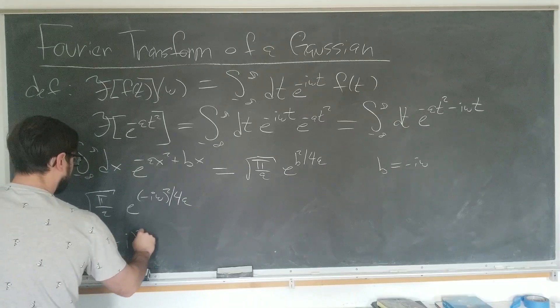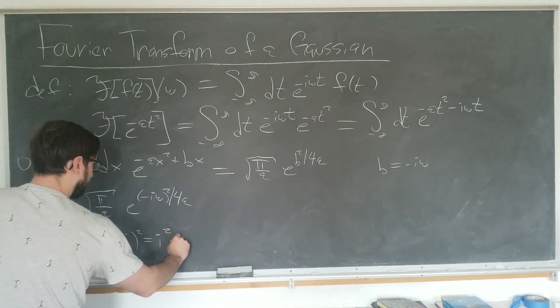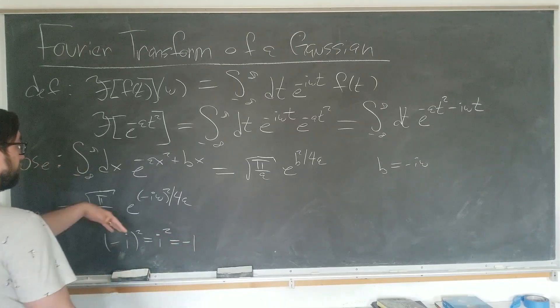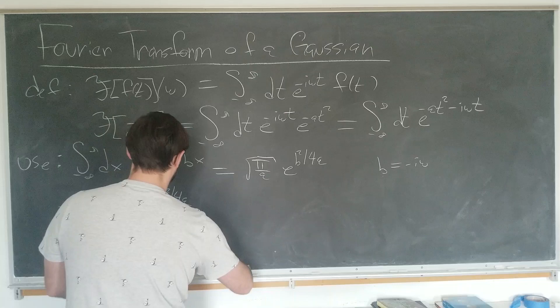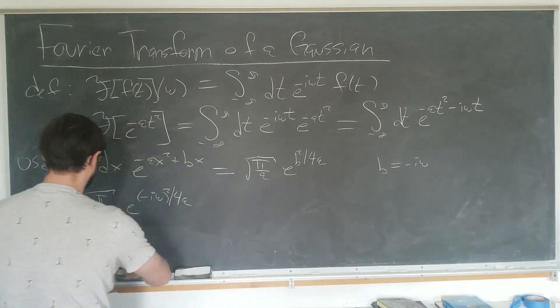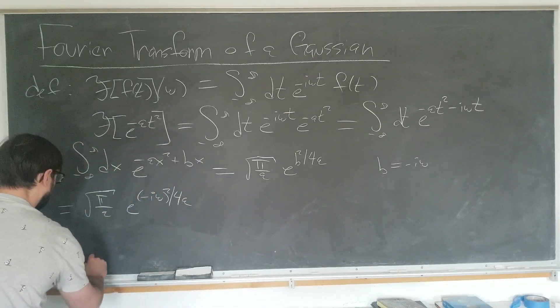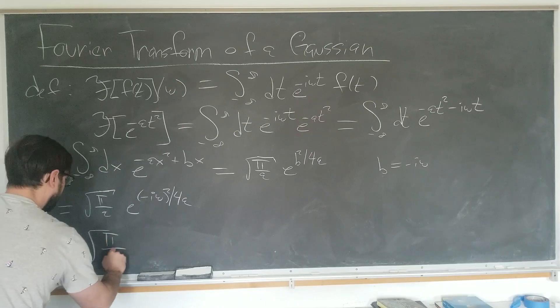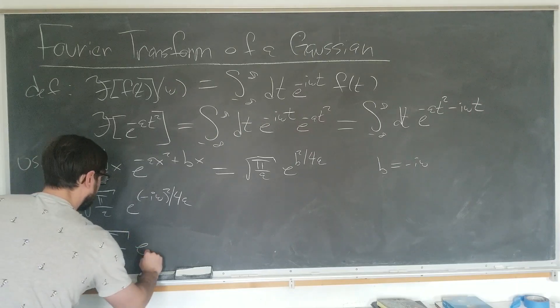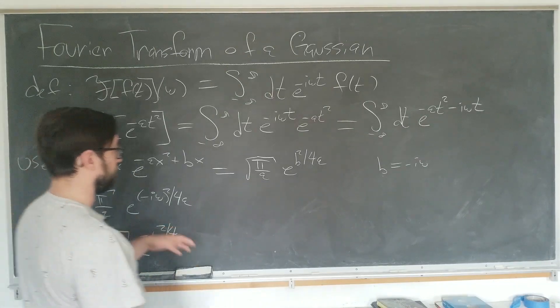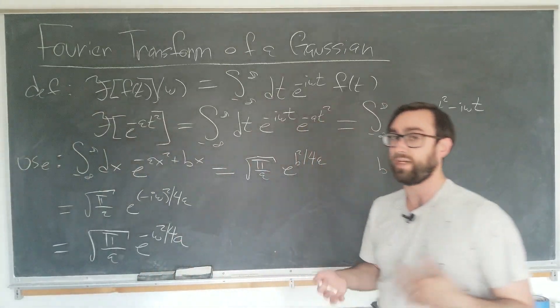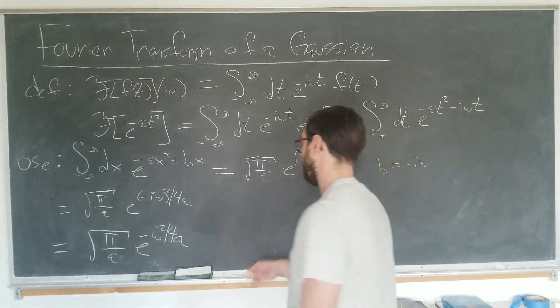minus i squared is just i squared, which is minus 1. So we get the characteristic negative sign of the exponential. It's now square root of pi over a e to the minus omega squared over 4a, which you can notice is also a Gaussian with a different constant.